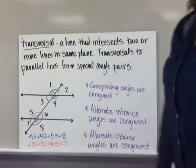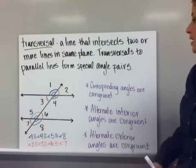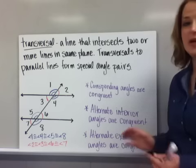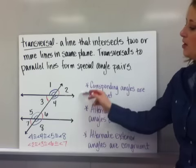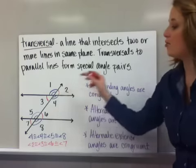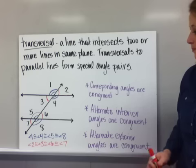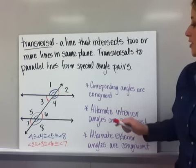A transversal is a line that intersects two or more lines in the same plane. Transversals to parallel lines form special angle pairs and that's what we're going to look at when a transversal cuts through parallel lines. So, you can see my parallel lines, the transversal is the diagonal going through there and I've tried to color code the congruent pairs.